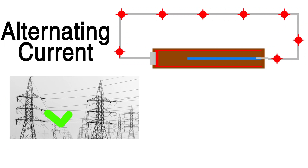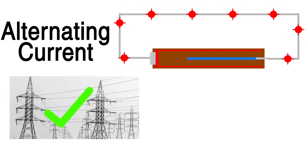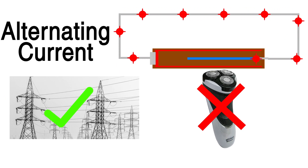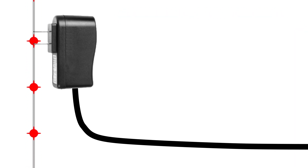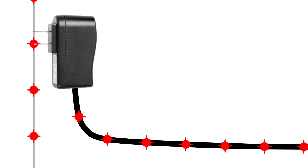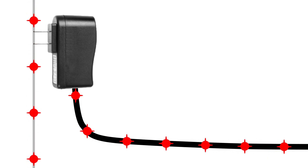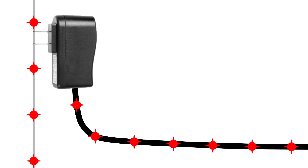Alternating current is great for the large electrical grid of power lines, but it doesn't really work that well for actual appliances. This is why most appliances have these big boxes on their power cables. That box extracts alternating current from your power outlet and converts it into direct current for your appliance to use. It also manages how much electricity is fed to the device so that it doesn't get overloaded.